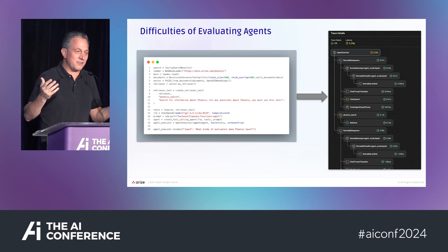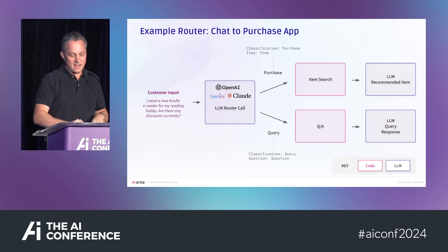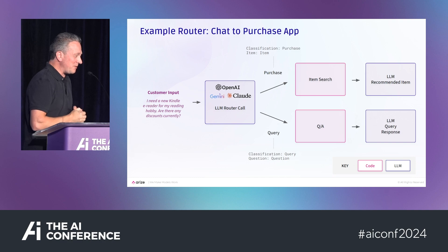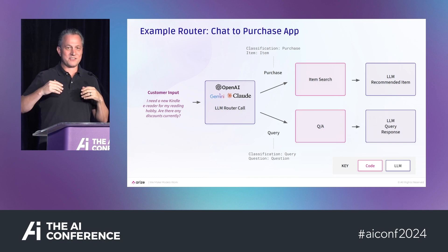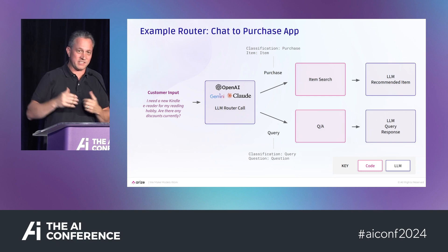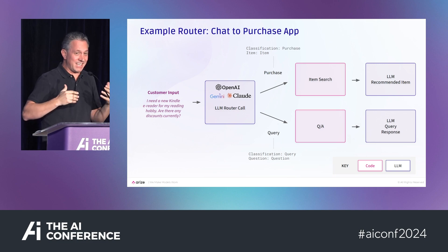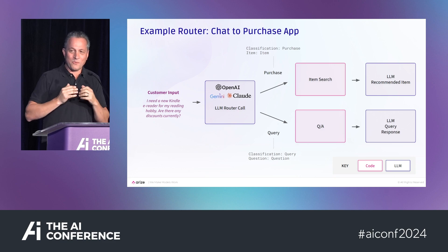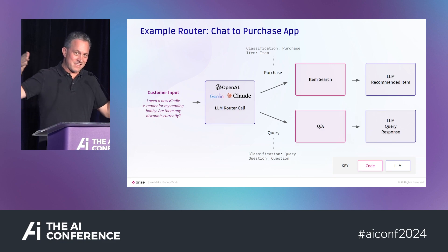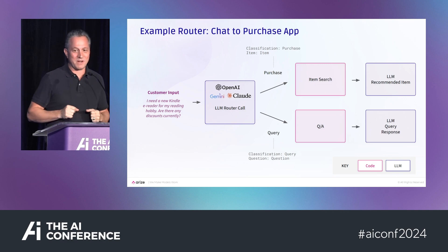The first thing most teams need to do is trace their agent to understand what it's doing. Typically there's a router doing an intent lookup to determine what skill or action to take. The question is: did they get that routing right? Did I call the right skill? And second: is the skill doing the right thing? Those are the two different things you want to evaluate.